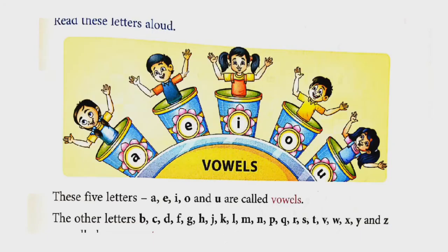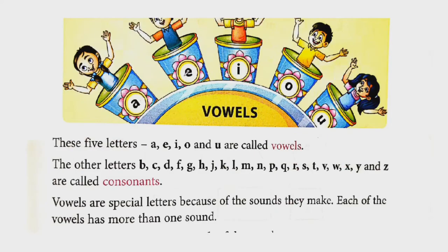Let us read the following letters aloud. Look at these letters: A, E, I, O and U. These 5 letters, A, E, I, O and U are called vowels. So the 5 letters A, E, I, O, U, we call vowels.